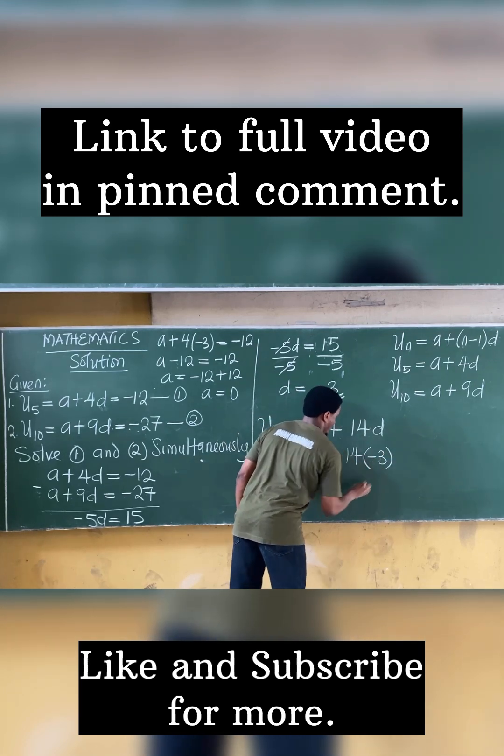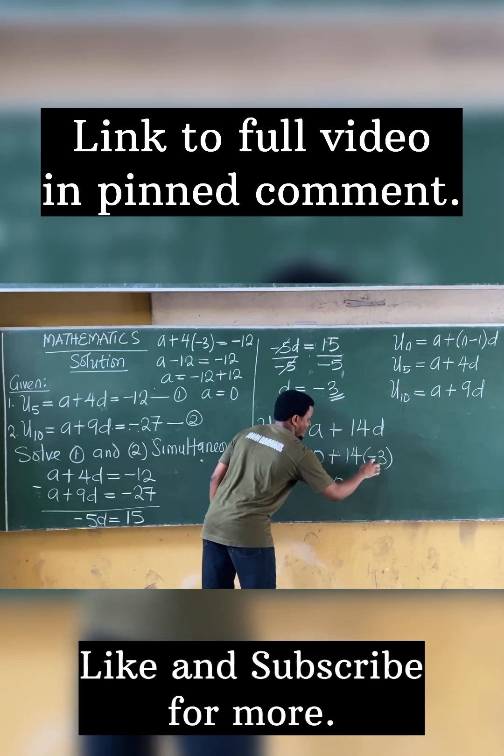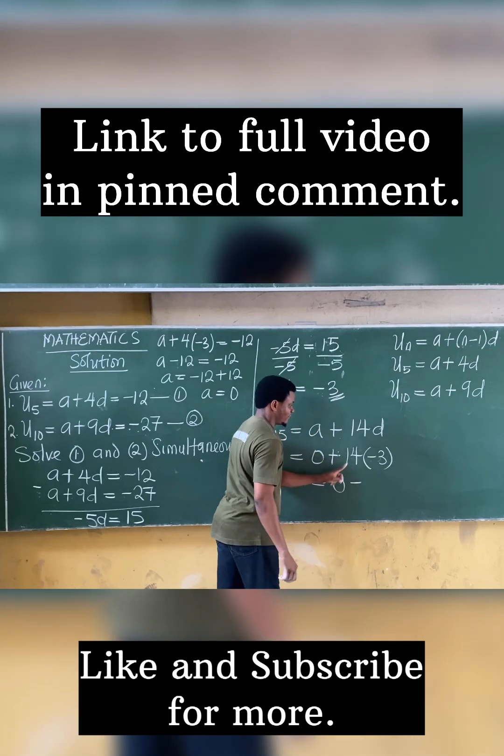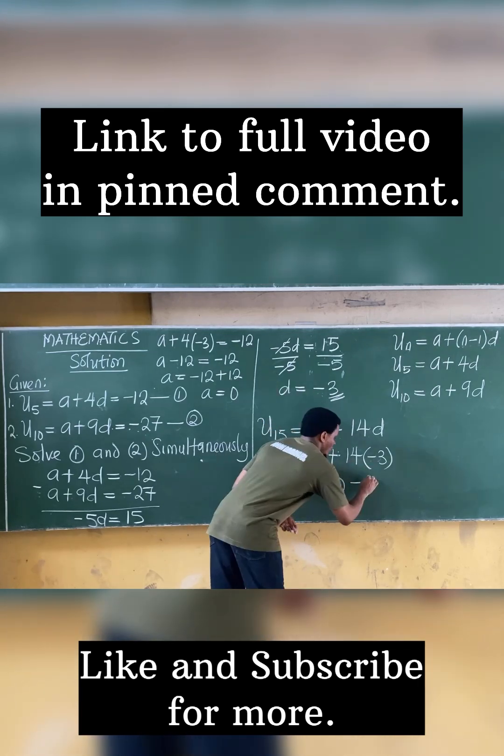So I have minus 3. And that's equal to 0. Plus times minus is minus. 14 times 3 is 42.